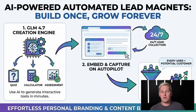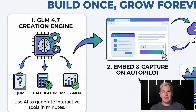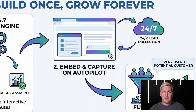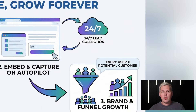One more angle for you. If you are building a personal brand or a content business, you can use GLM 4.7 to create interactive lead magnets — think quizzes, assessments, calculators that capture emails. You build it once using the AI, embed it on your site, and it runs on autopilot. Every person who uses it is a potential customer in your funnel.